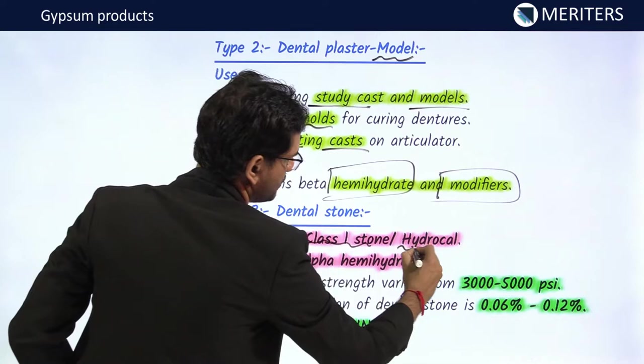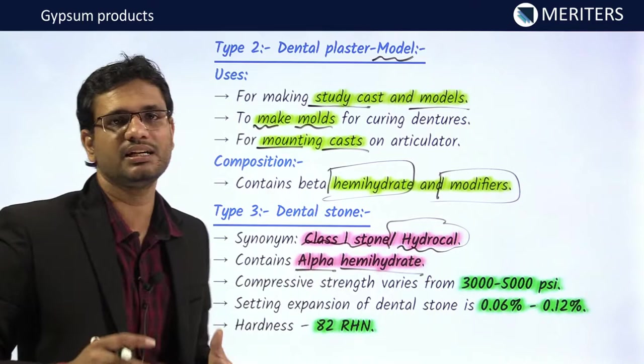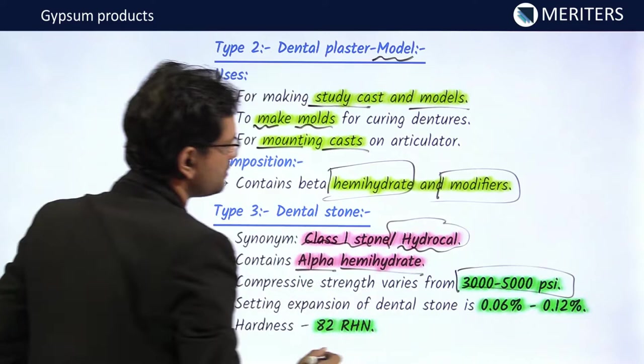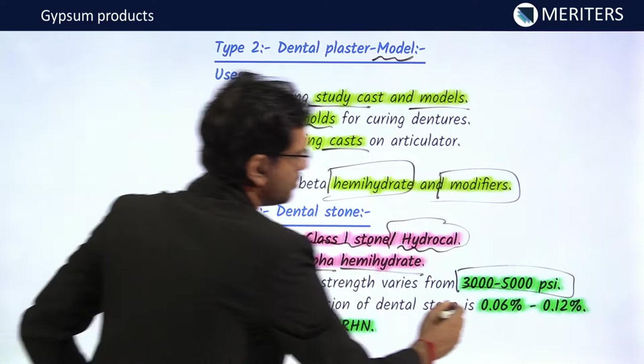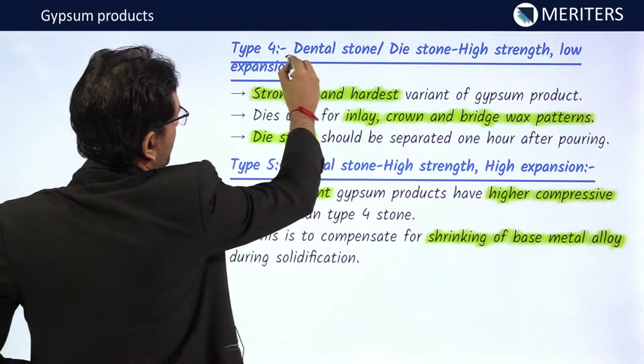Type 3, dental stone, is also known as class 1 stone or hydrocal. It contains alpha hemihydrate, while type 2 contains beta hemihydrate — that is the basic chemical difference. Its compressive strength is around 3000 to 5000 psi, setting expansion is 0.06 to 0.12 percent, and hardness is 82 RHL.